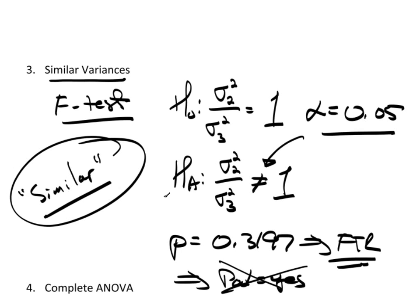If the variability was not similar, we'd have to make a decision: either apply some type of variance-stabilizing transformation, which is discussed in the book, or go ahead and do a non-parametric technique instead. But because they're similar, we think we're okay here.